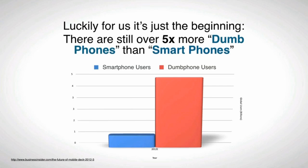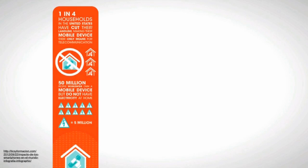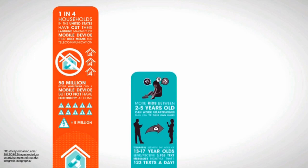Luckily for us, it's still just the beginning, because there are still over 5 times more dumb phones than smartphones. 1 in 4 households in the United States have cut their landline, making the mobile device their only means for communication. 50 million people worldwide own a mobile device but don't even have electricity at home. More kids between 2 to 5 years old can work smartphones than can tie their own shoes, and teenagers between the ages of 13 to 17 send and receive 3,705 text messages on a monthly basis.